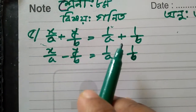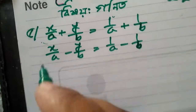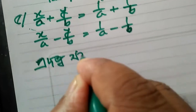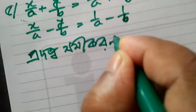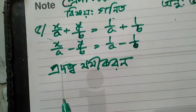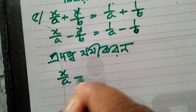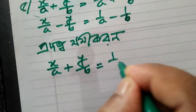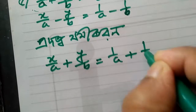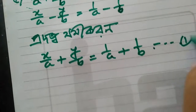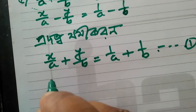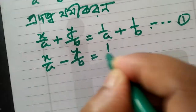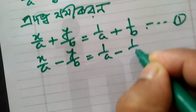Let me show you how to consider the equations. Equation 1: x by a plus y by b is equal to 1 by a plus 1 by b. Equation 2: x by a minus y by b is equal to 1 by a minus 1 by b.